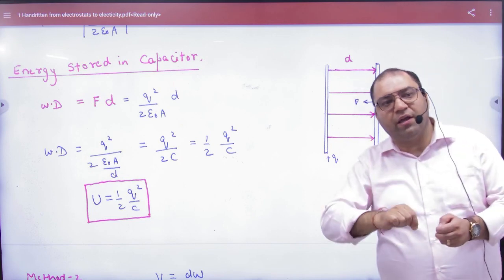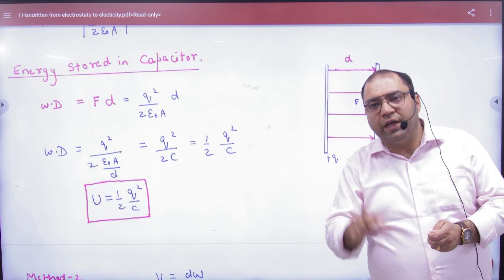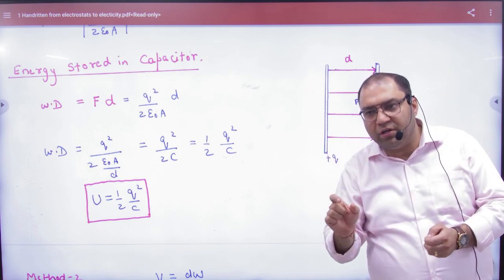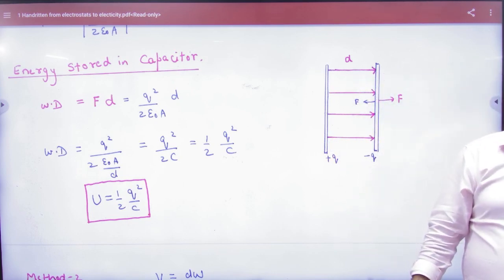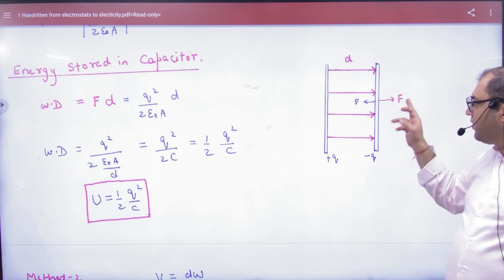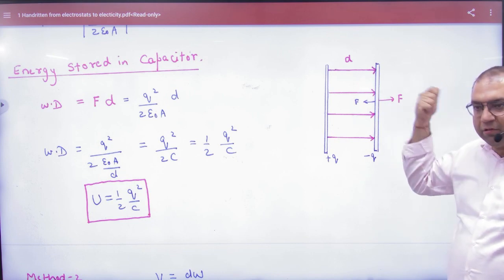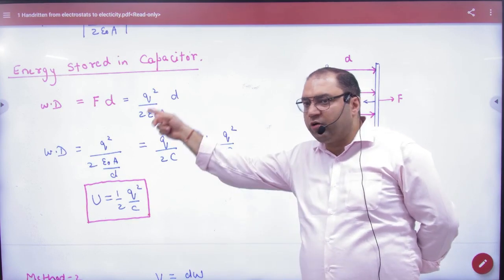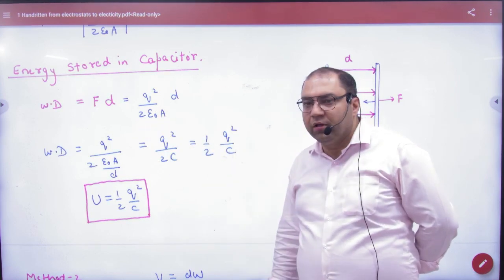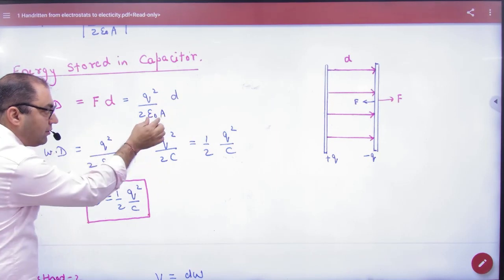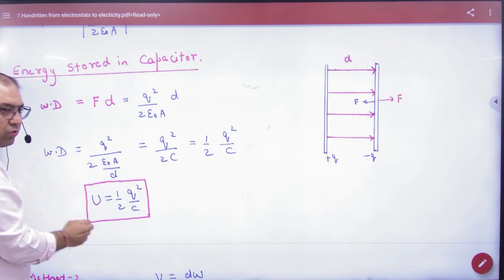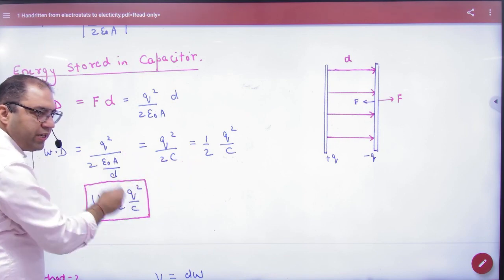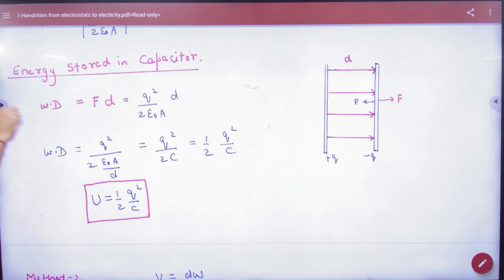This amount of work done is stored in the form of potential energy. If you release the force, the plates come back together and the work done becomes zero. So the work done is F into d. Using the relation C = epsilon × A / d, we arrive at the energy stored in a capacitor: U = ½Q²/C. This is the formula for energy stored in a capacitor.